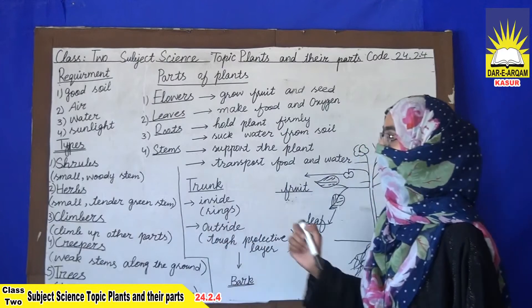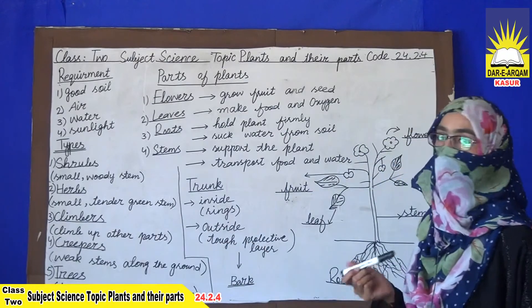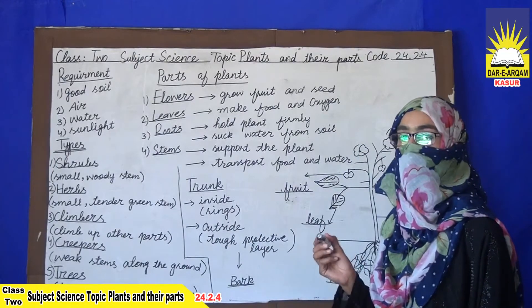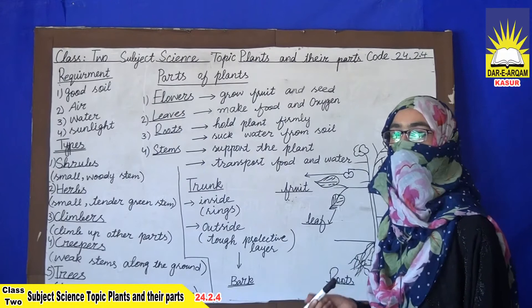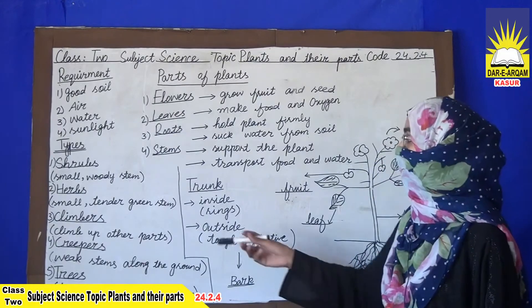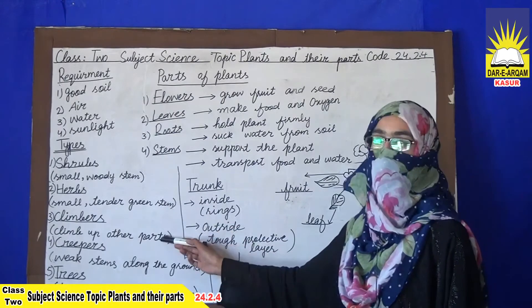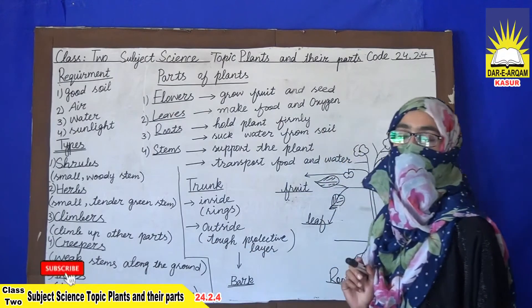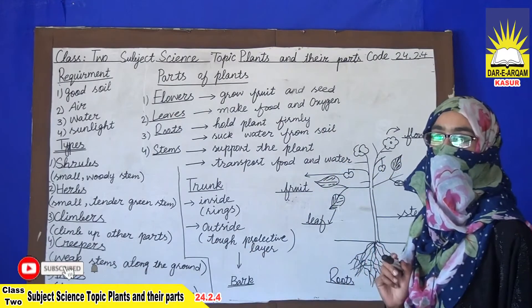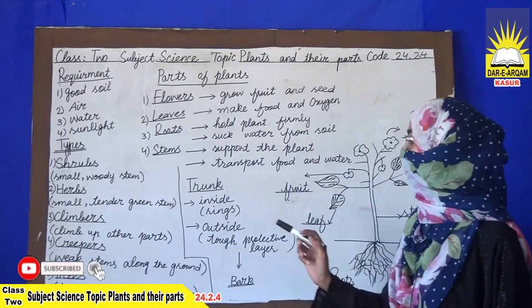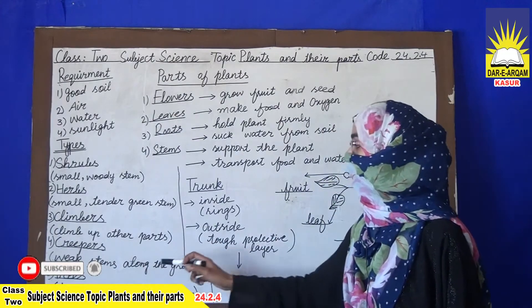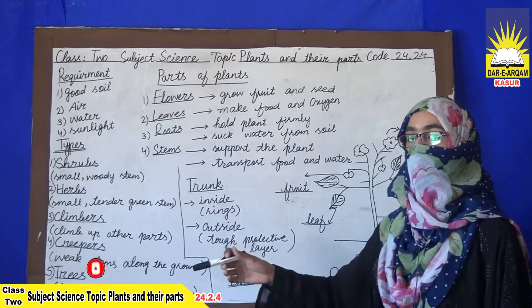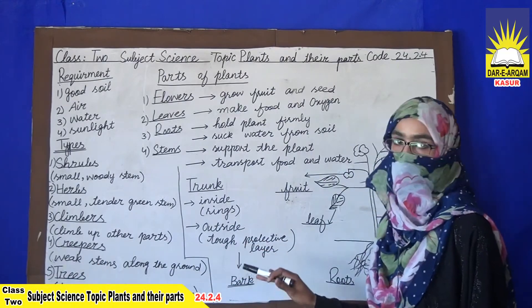Number three: climbers. As the name represents, climbers climb up other parts of plants or other surfaces. They grow by climbing up other plants or surfaces.